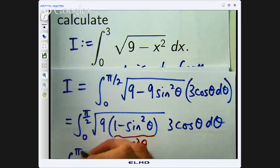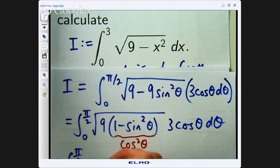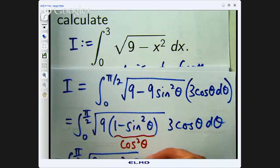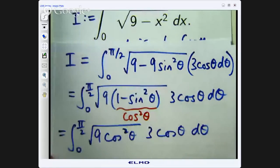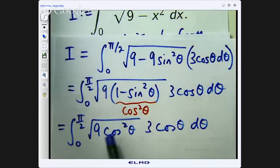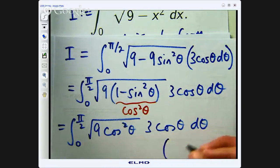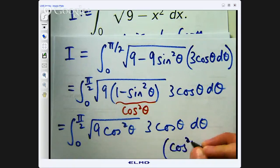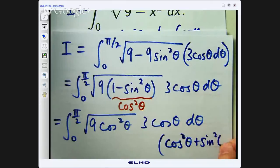Now cos squared plus sine squared equals 1 so this thing in here 1 minus sine squared is just cos squared theta. So this whole thing now that is going to be 9 cos squared theta take the square root we are going to get that times this now again we can take the square root here so we are going to get 3 cos theta now we only want the positive square root there because theta is between 0 and pi on 2.